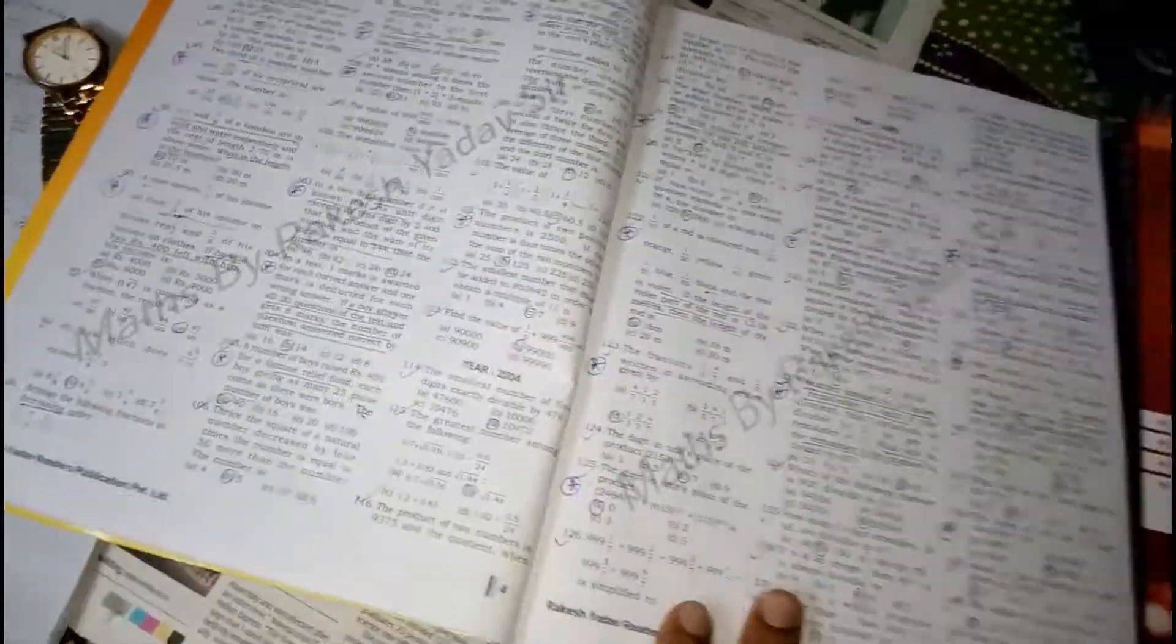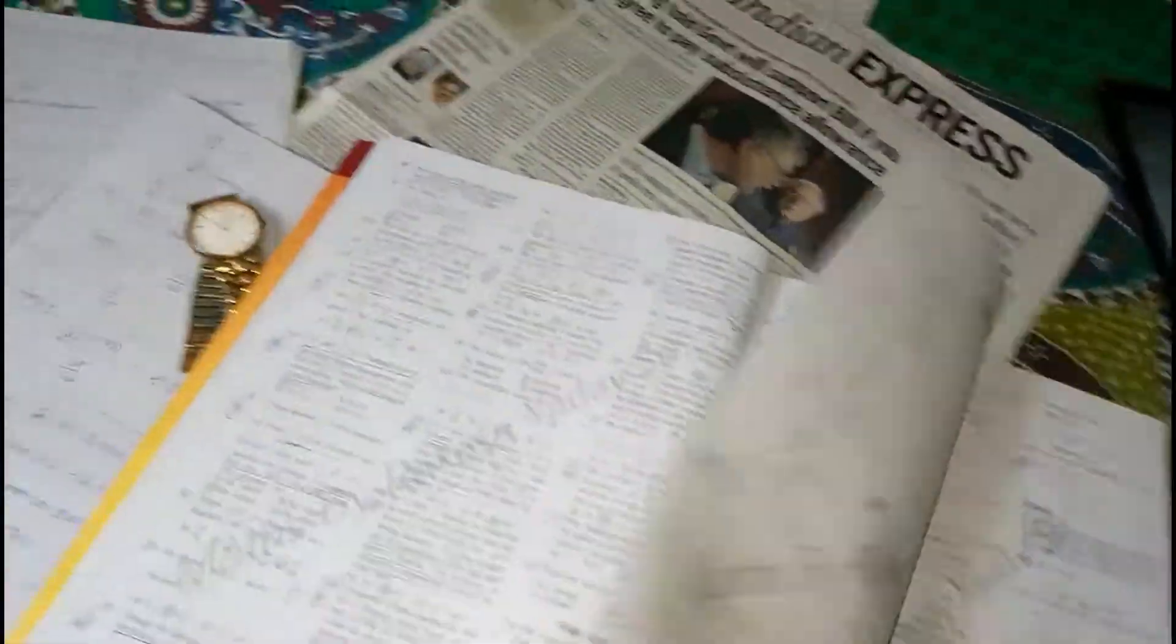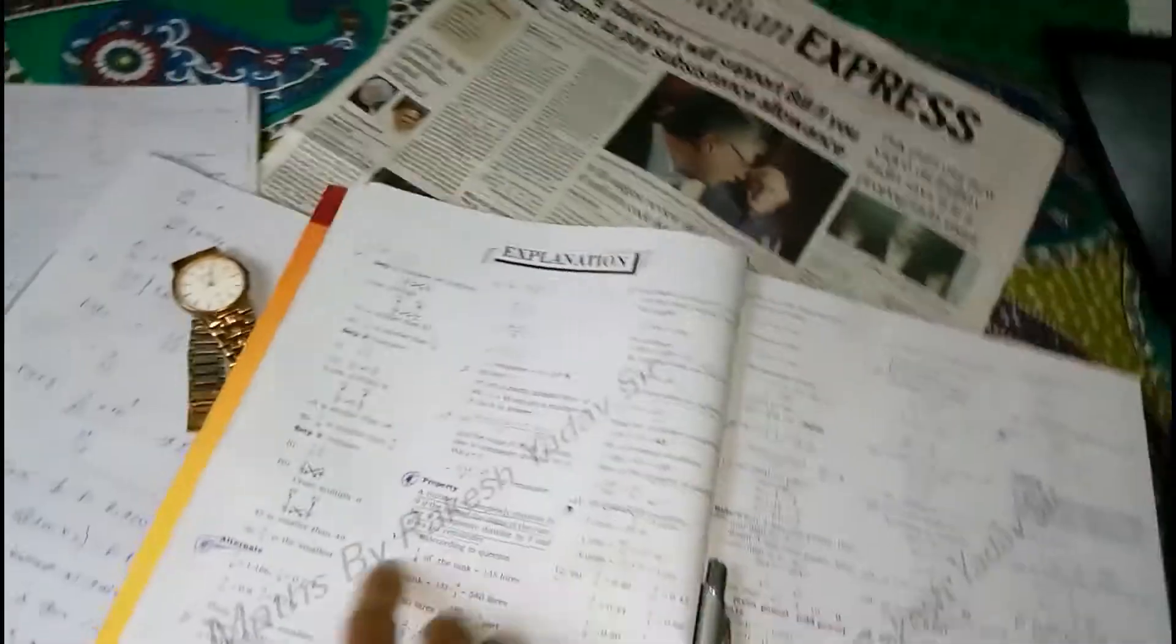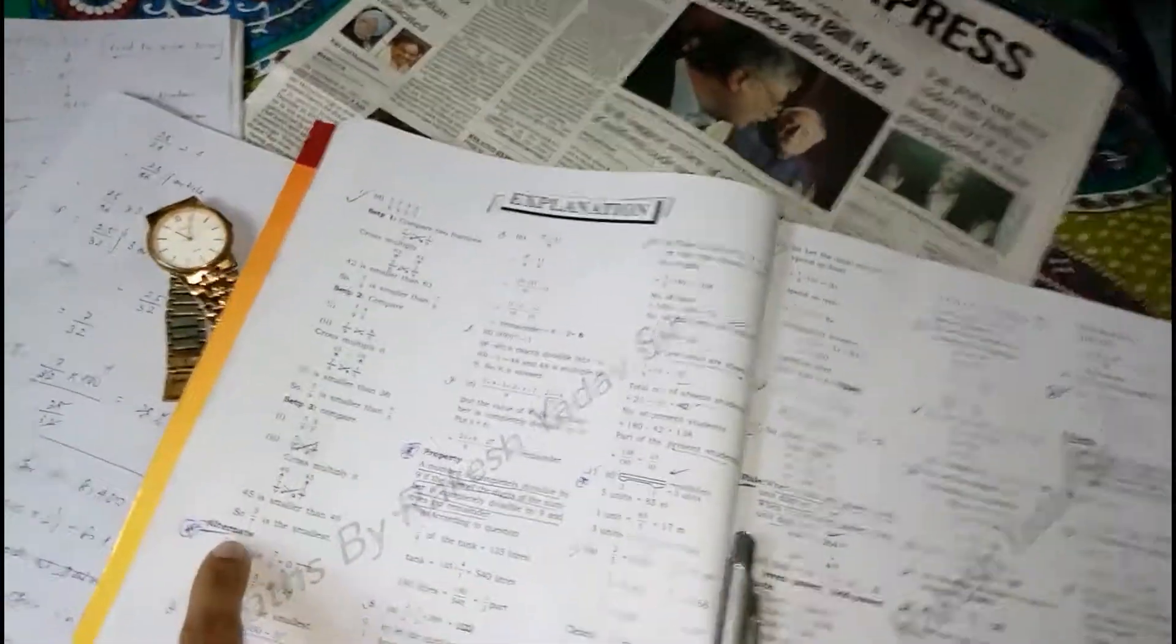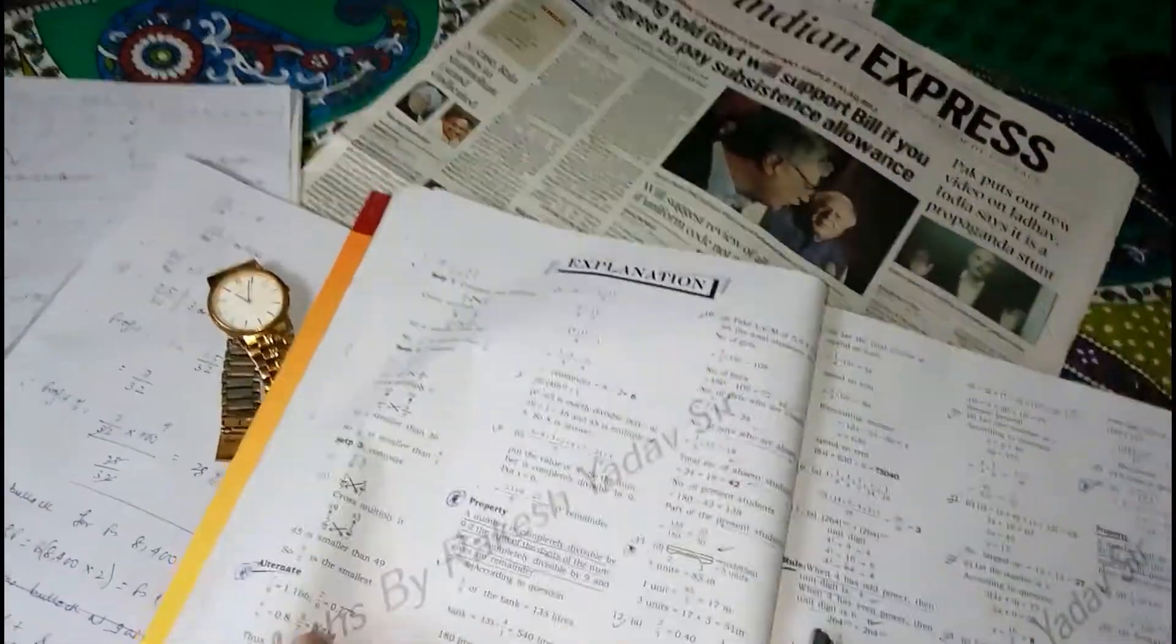Then some move on to some examples with detailed solutions and shortcut method as well. Then all these detailed solutions has been given and then you should move on to practicing this book here. As you can see here in this explanation part, all the alternative process.